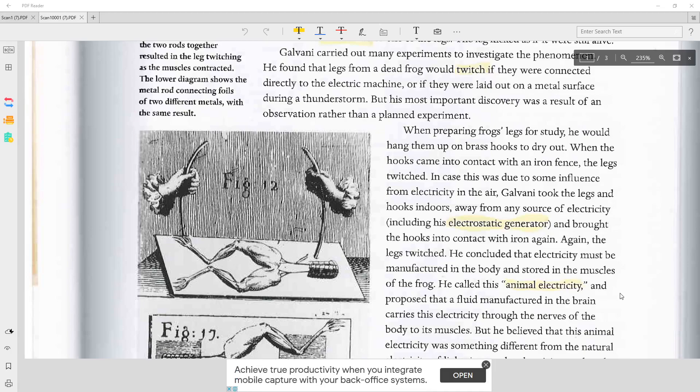In case this was due to some influence from electricity in the air, Galvani took the legs and hooks indoors away from any source of electricity, including his electrostatic generator, and brought the hooks into contact with iron again. Again the legs twitched.